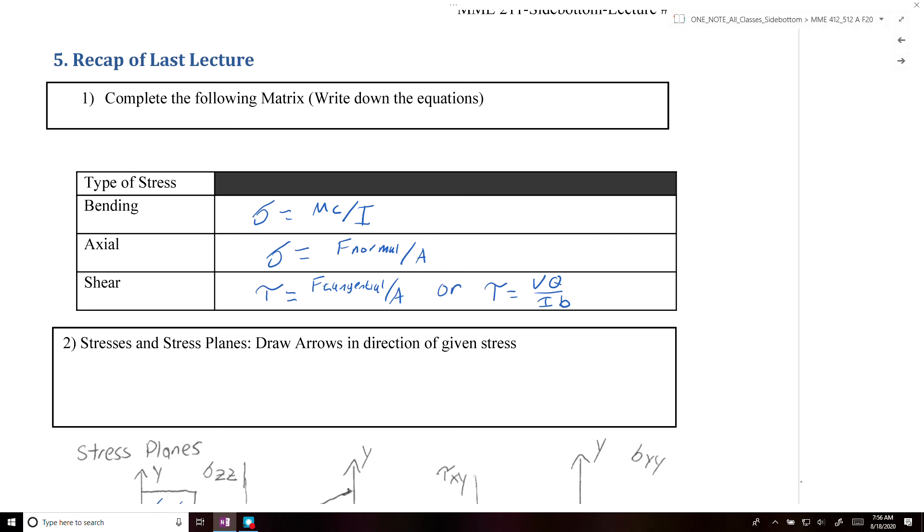So bending stress is equal to the moment times the distance from the centroid of your cross-section divided by the moment of inertia of your cross-sectional area. Axial stress is equal to just your normal force divided by your cross-sectional area. And then your shear stress is equal to your tangential force divided by your area. Or in the case of beam bending, it's equal to your shear force V times the first moment of inertia Q divided by the second moment of inertia, or the pole I, divided by B, which is the width of the section.